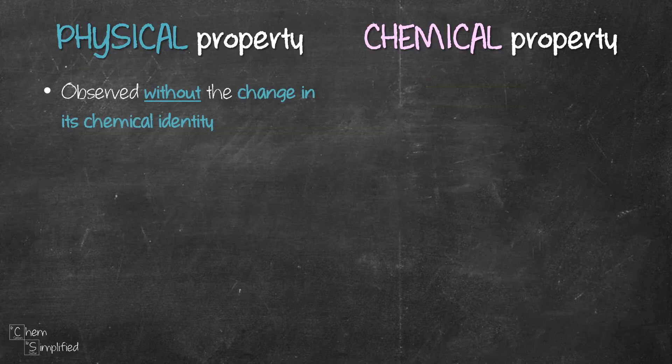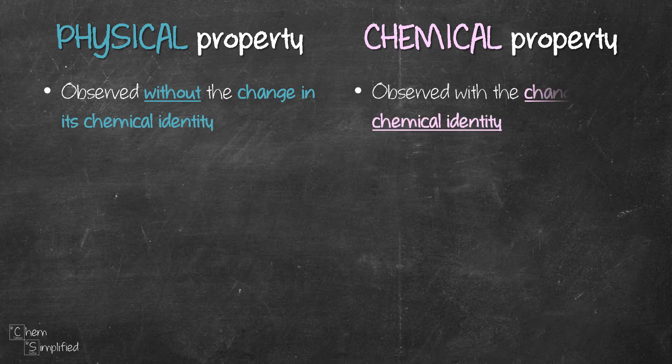Physical property can be observed without changing the chemical identity of the substance. Chemical property, on the other hand, is observed after the chemical identity of the substance has changed. So the main difference between physical and chemical property lies in the chemical identity of the substance — whether it changed or not.